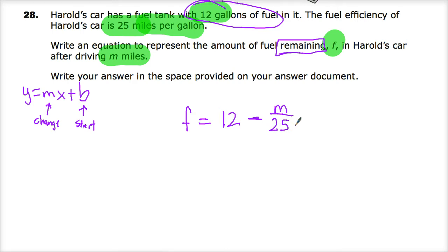You could write it as 1/25 times M, but I prefer M divided by 25. It's the same thing. The answer key will say any equivalent form, and this is one of the times it's correct.